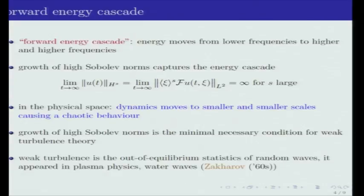In physics, or more specifically in weak turbulence theory, what this means is that you have some nonlinear system and you see how your energy moves from lower frequencies to higher and higher frequencies over time. If you have growth of high Sobolev norms, it's very easy to see that this energy cascade takes place. It's sufficient to write your Sobolev norm on the Fourier side. If you want this quantity here to grow but at the same time keep the mass constant, then the only possibility is that |ξ|^2s grows. Or in other words, this Fourier transform of u has to be supported on larger and larger |ξ| as you increase the time. This is nothing else than the forward energy cascade.